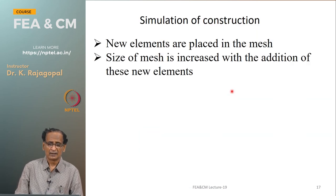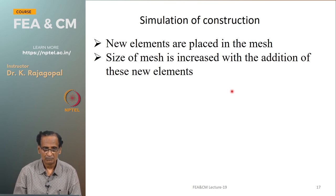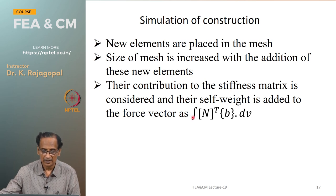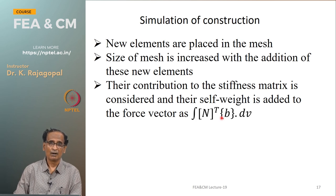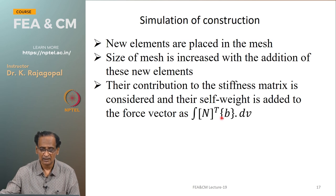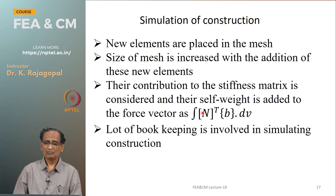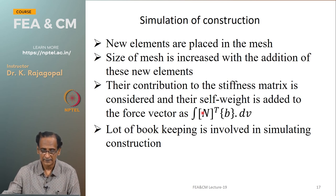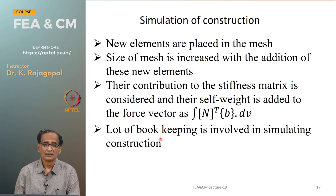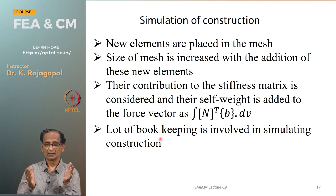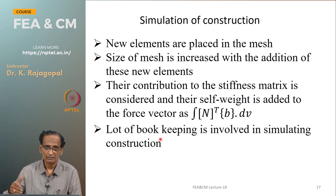Simulation of construction means placing new elements in the mesh, increasing its size. The self-weight of these elements is added to the load vector as the integral of N-transpose*rho integrated over the volume, and their stiffness is assembled into the global stiffness matrix. The program must track which new elements are placed, calculate their stiffness matrix and load vector, and add them to the existing system to simulate construction.